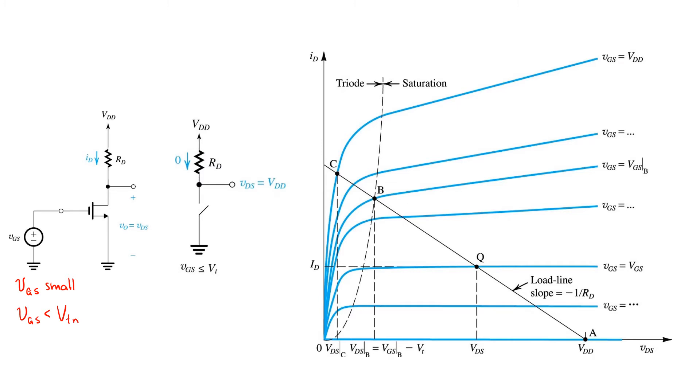As a result, we know that the transistor would be in cutoff and can therefore be modeled by an open switch, as shown here on the right.